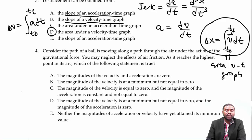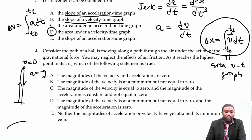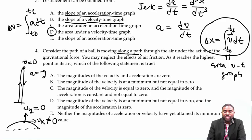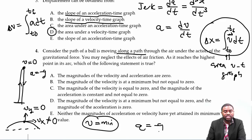What happens at maximum height? If we throw the ball vertically upwards, at maximum height the velocity equals zero and a equals negative g. If the ball follows a parabolic path, at maximum height we have two velocities, vx and vy. The vertical velocity equals zero, but the horizontal velocity is not zero. Since the object is moving along a path, we are dealing with a parabolic path. Therefore, at maximum height the speed is minimum but the acceleration is negative g. My choice of answer is B.